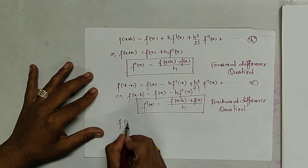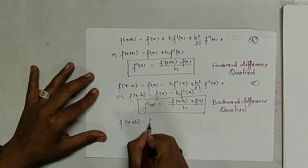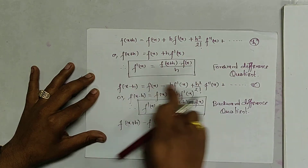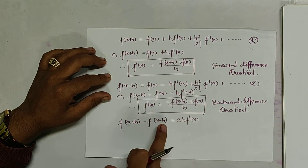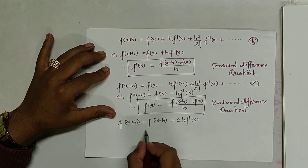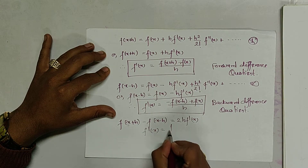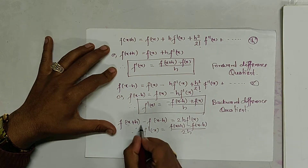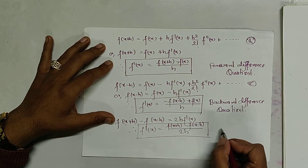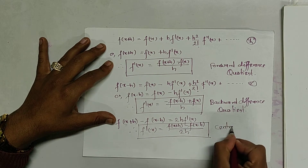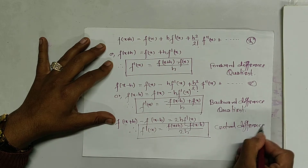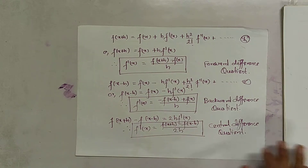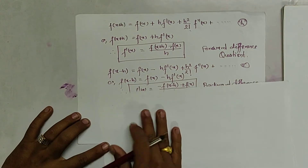Now when we subtract equation 1 and equation 2, we get f(x+h) minus f(x-h) equals 2·f'(x), so we get f'(x) equals [f(x+h) minus f(x-h)] divided by 2h. This is also a formula to calculate the derivative of a function, and it is known as the central difference quotient.